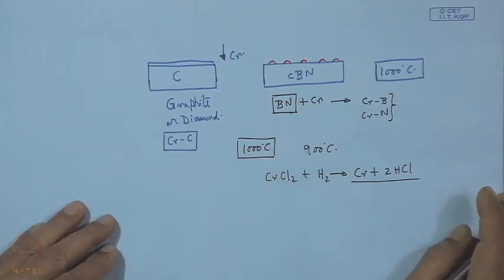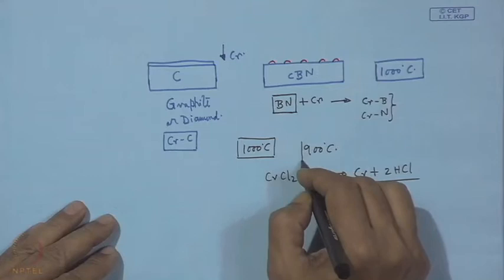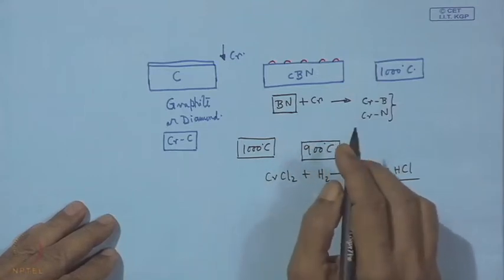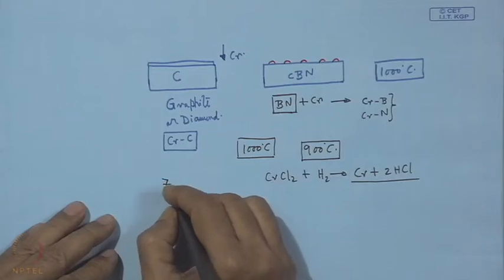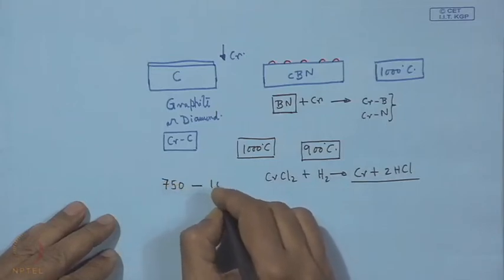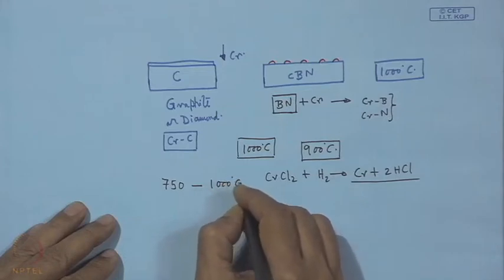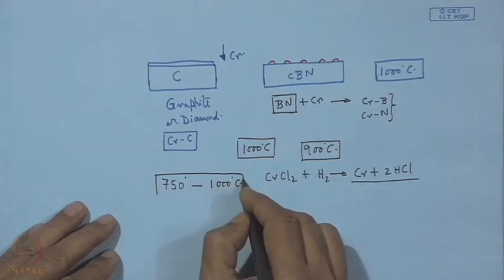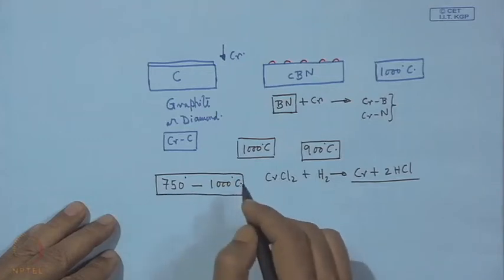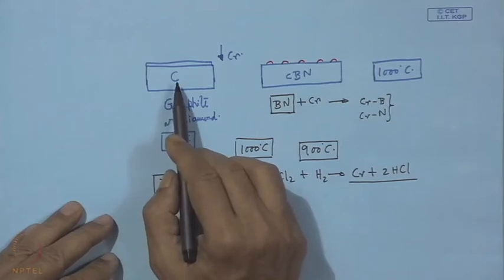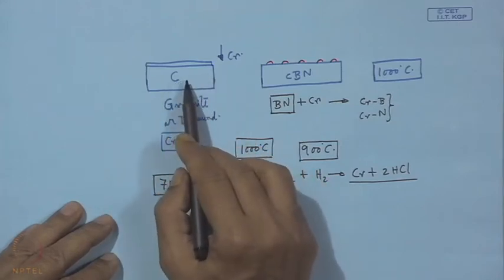The question is to keep the temperature as low as possible. As mentioned, deposition can be done between 750 to 1000 degrees centigrade, and one can look into the low end of this temperature range, which will be quite suitable for deposition of chromium over graphite or diamond.